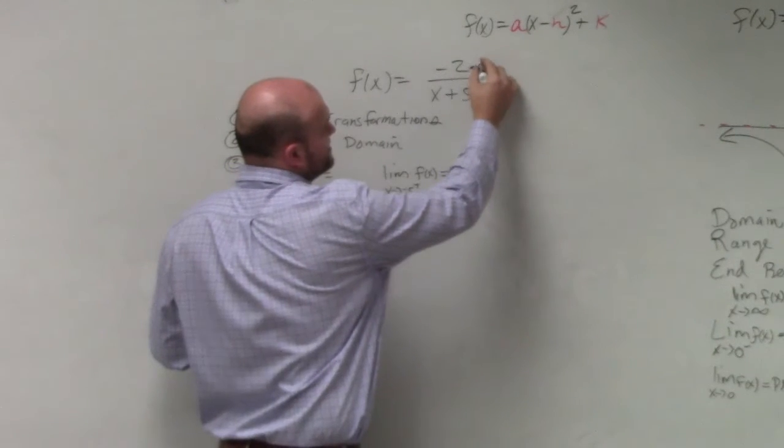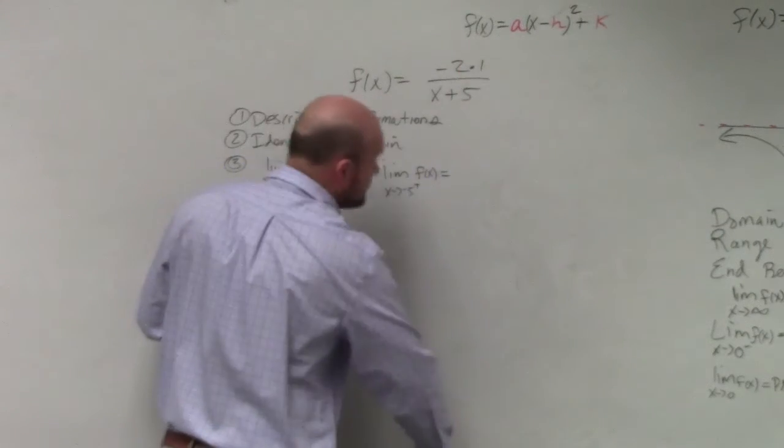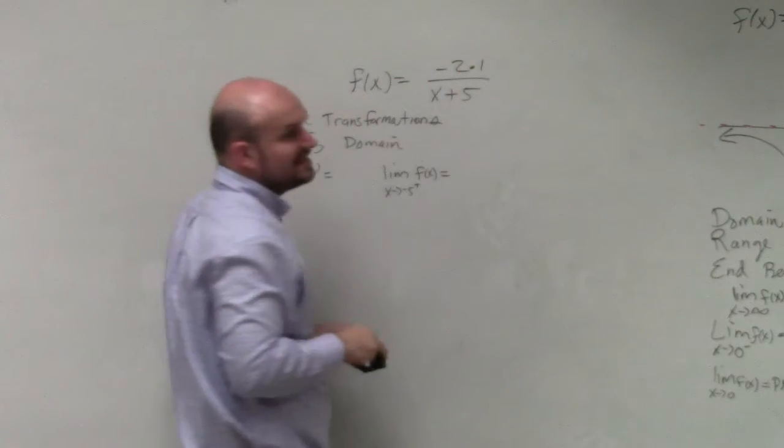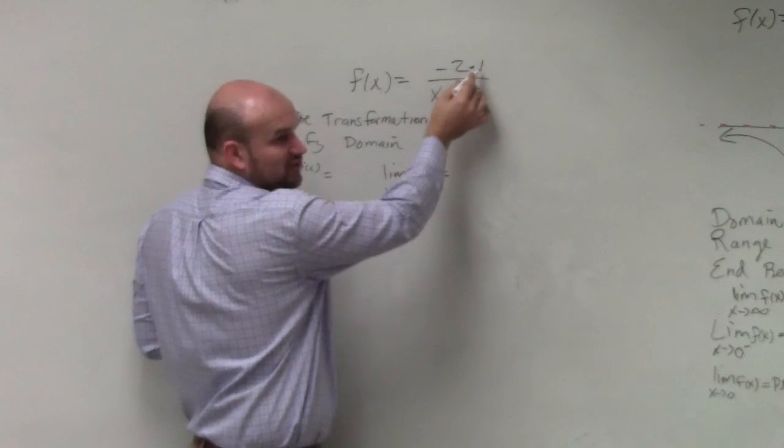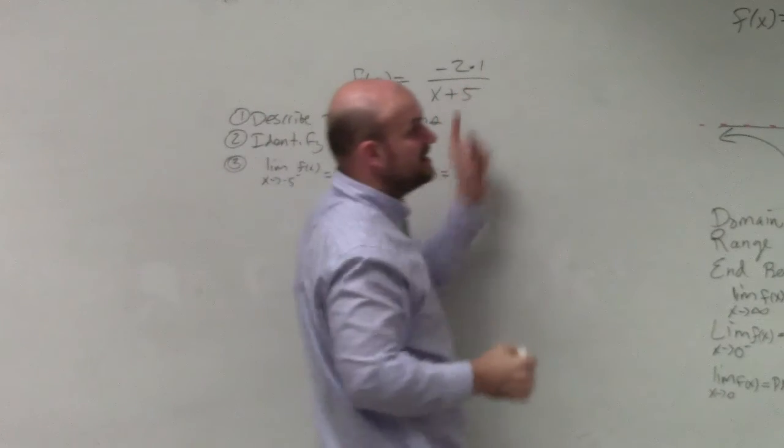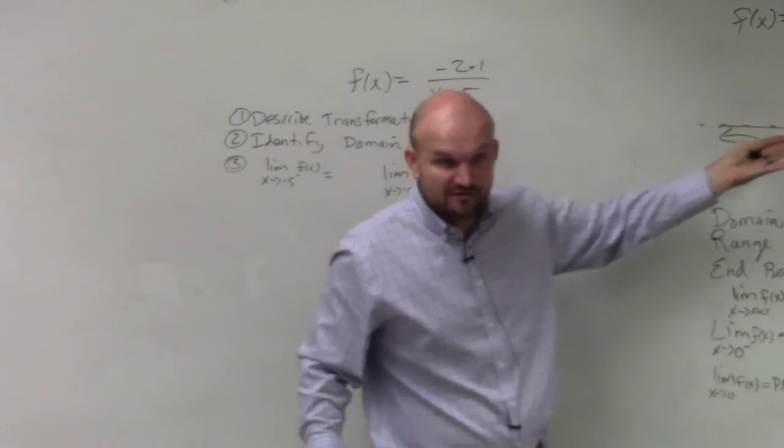Please note, you could always think of this as times 1 over here. So in reality, we want to identify what is happening to this graph. You have this -2 being multiplied by 1, technically, right? So that -2 is technically your value of a, your variable a.